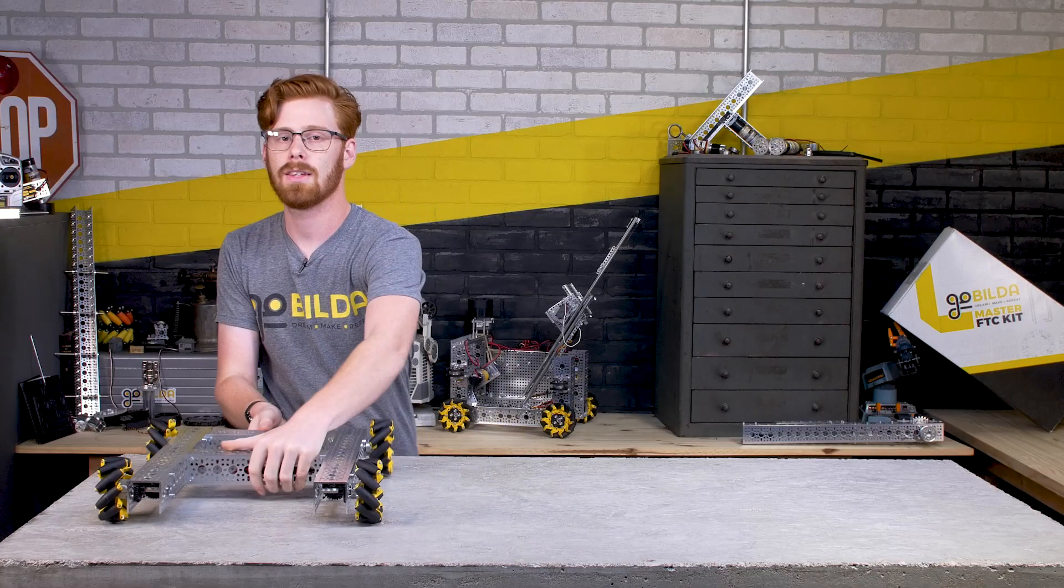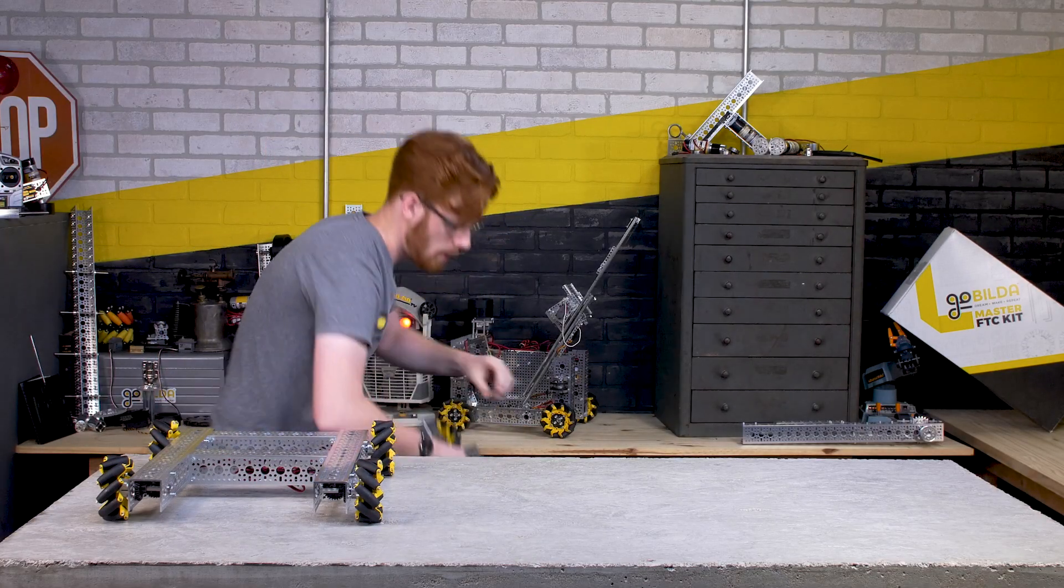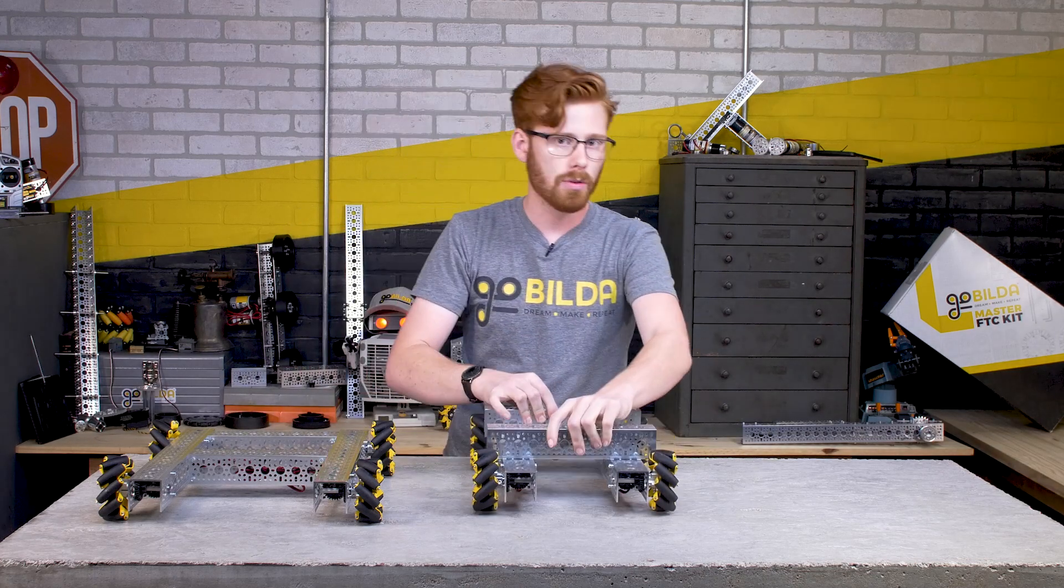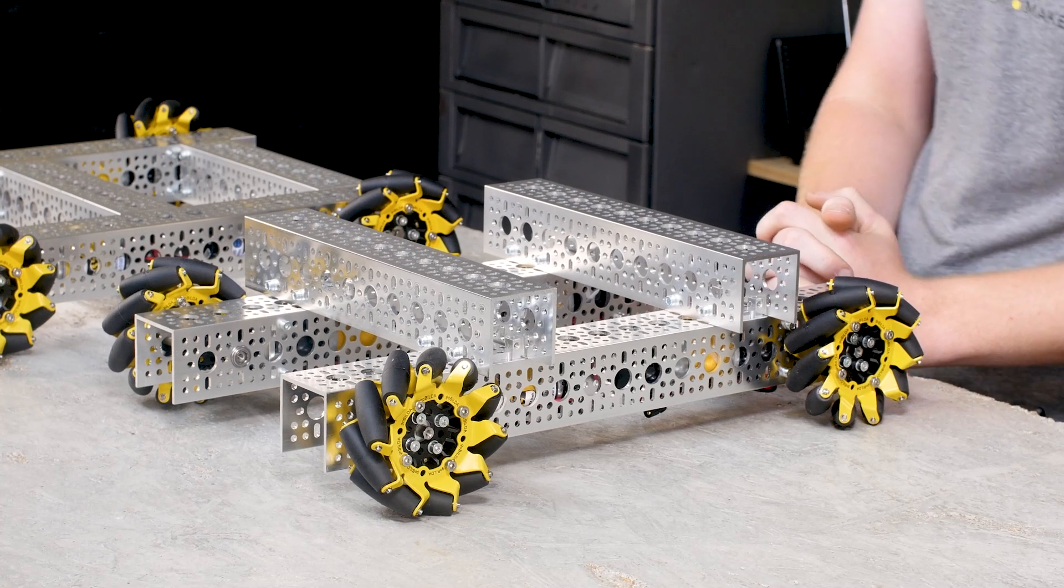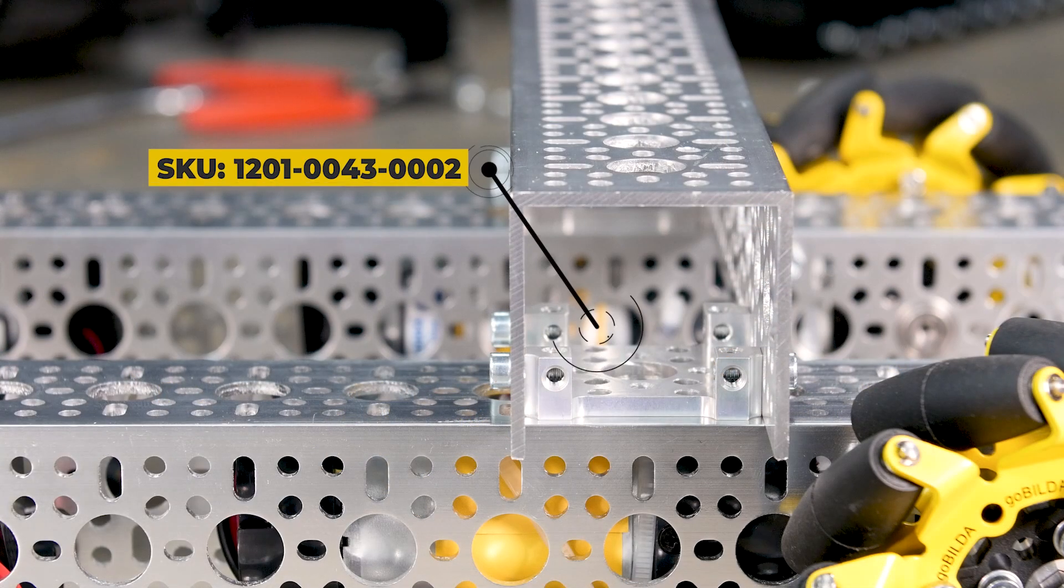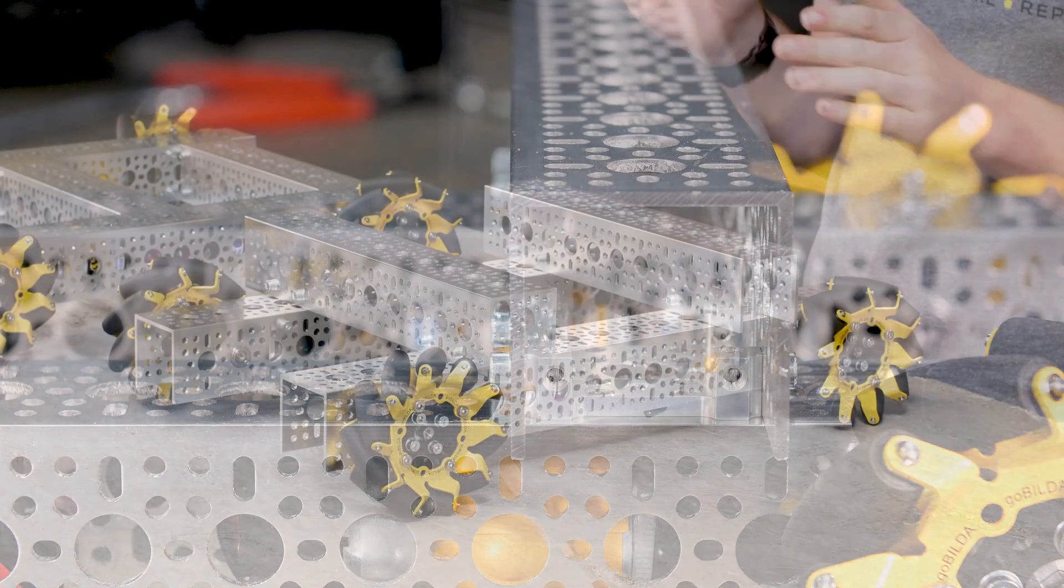The first one I especially like because it requires no additional components. It uses the same 10 hole cross beams but mounts them on top of the drive rails instead of beside them. This uses the same 1201 series pattern mounts that you use on the original strafer assembly but puts them in a slightly different configuration.